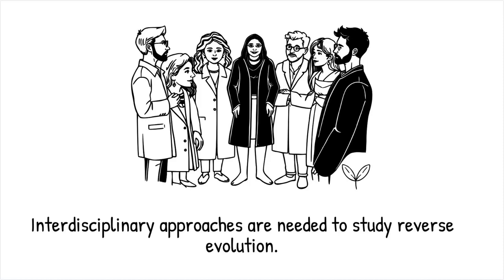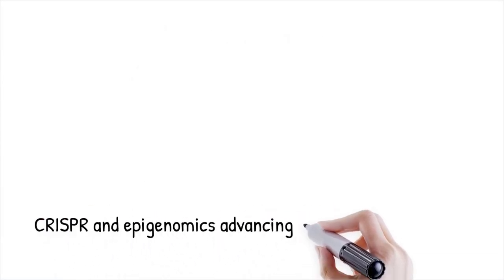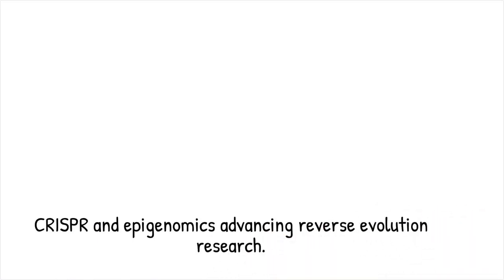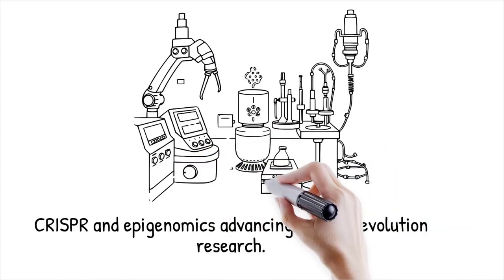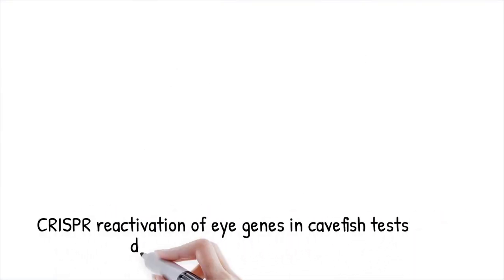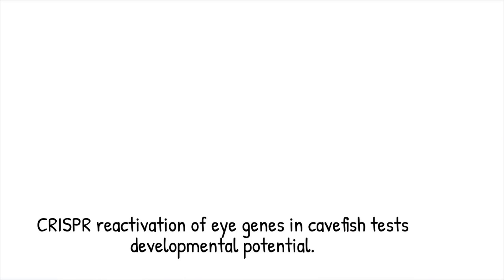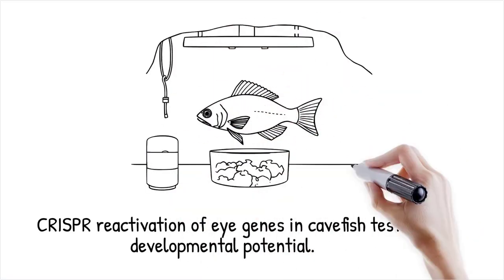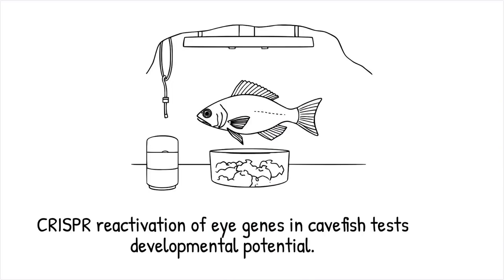Emerging CRISPR tools enable precise toggling of ancestral gene networks to test developmental potentials in vivo. Advances in epigenomic profiling may reveal how chromatin states preserve or erase developmental memory over evolutionary timescales. Insights into reverse evolution could inform conservation by predicting species responses to rapid environmental change. Ultimately, unraveling this mystery will deepen our grasp of evolutionary flexibility and the true limits of biological form. CRISPR reactivation of eye developmental genes in cave fish is being tested to assess their latent developmental capacity — like using preserved architectural blueprints to reconstruct a historic monument, revealing the hidden design beneath layers of modern renovations.